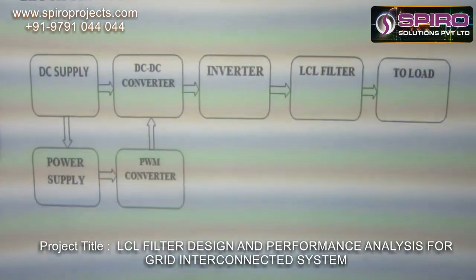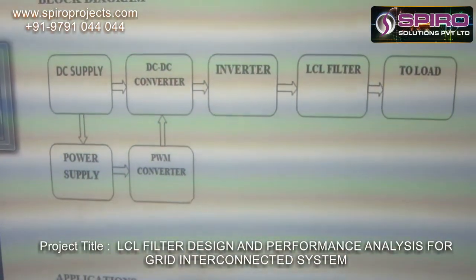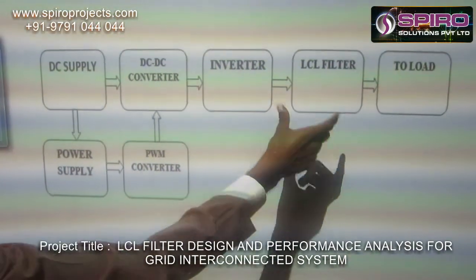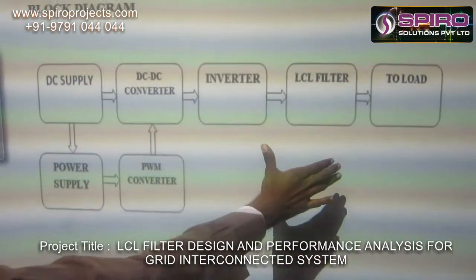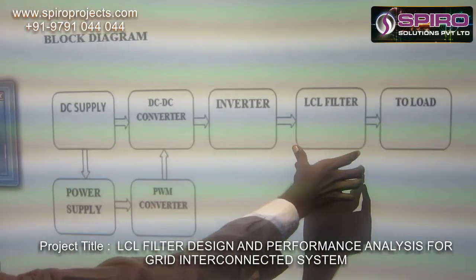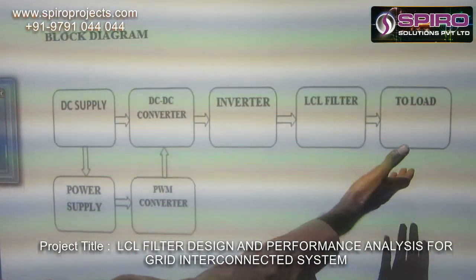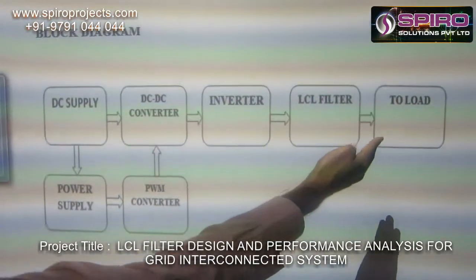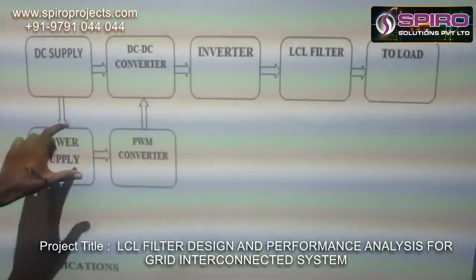The inverter converts DC into AC. In the AC output, there is ripple and harmonic voltage in the load voltage and load current. That is why I am going to design an LCL filter — to remove the ripple voltage in the load voltage and load current. After that, the clean output is given to the load.